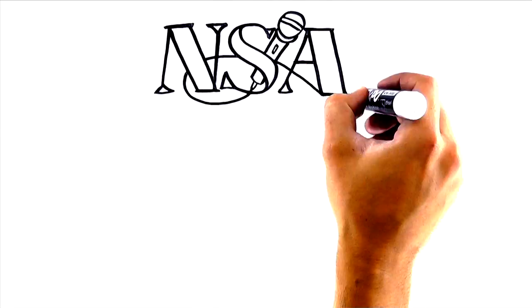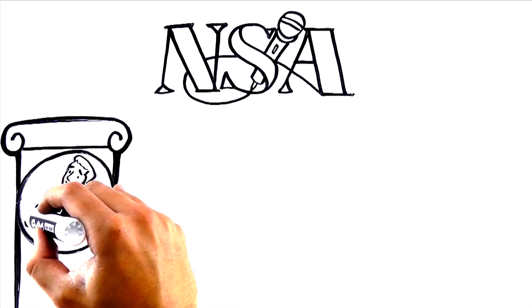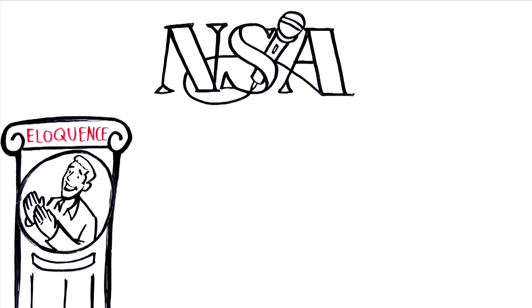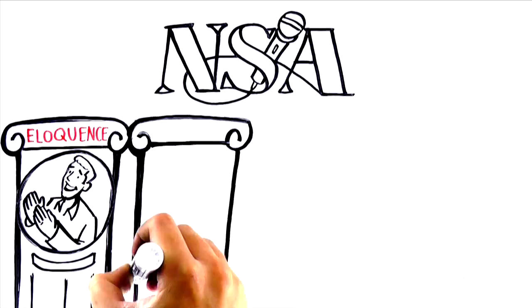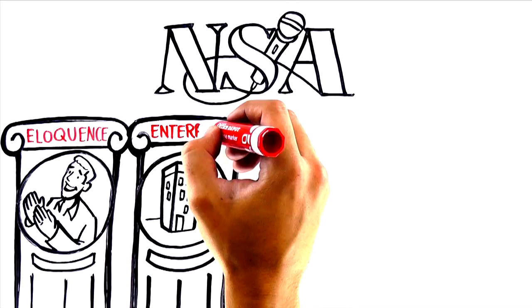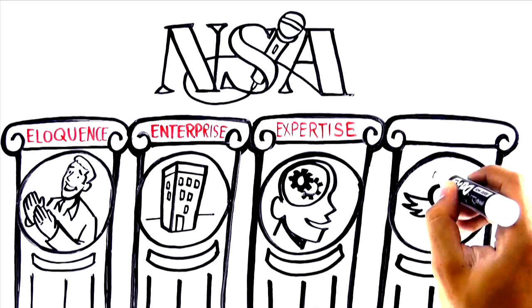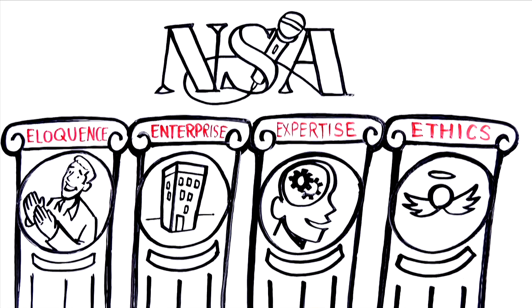From the beginning, NSA's mission has been focused in four major areas, the four E's. Being more eloquent. Realizing speaking is more than a passion, but a business so you can build an enterprise. Honing and developing your expertise and doing it all ethically. This spirit still holds true today in everything NSA does.